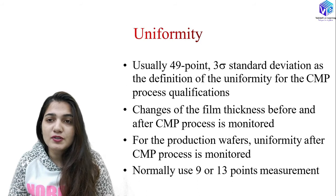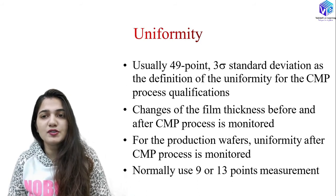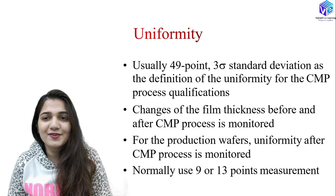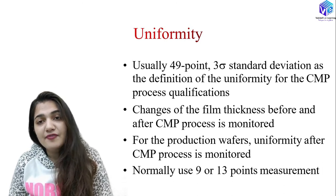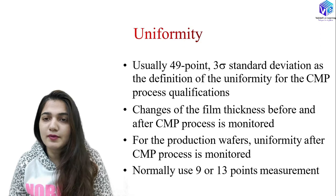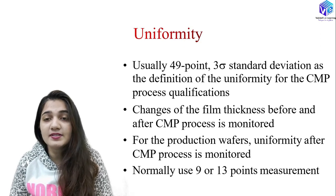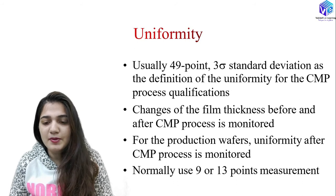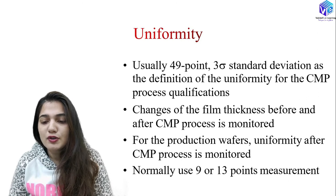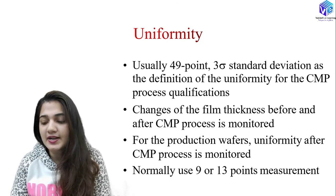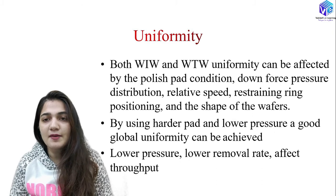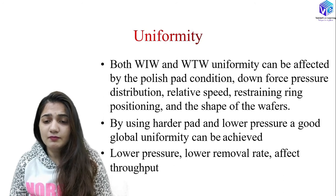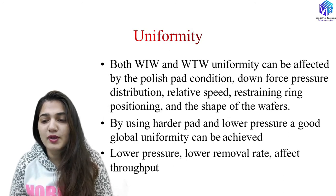Uniformity after the CMP process would be higher because parameters don't change much at different points due to the planarized structure. For production wafers, uniformity after CMP is monitored with 9 or 13 points. Before CMP we take 49-point measurements; after CMP we take 9 or 13-point measurements. We also consider within-wafer and wafer-to-wafer uniformity.